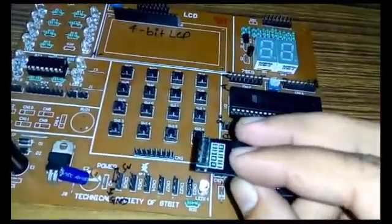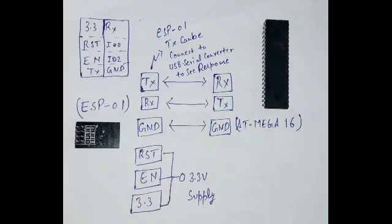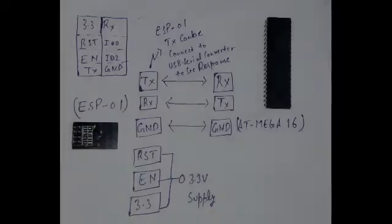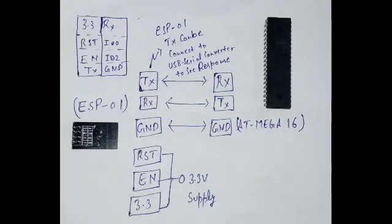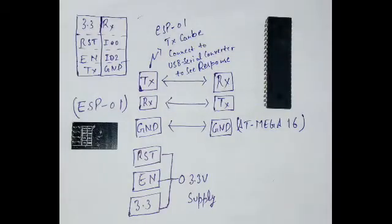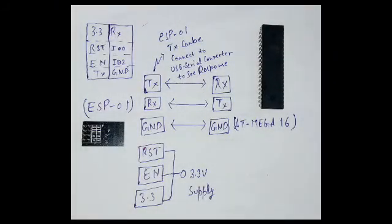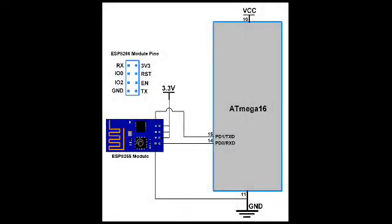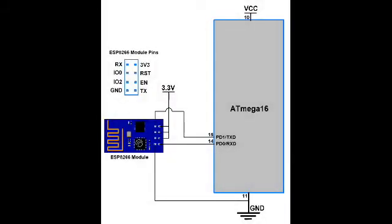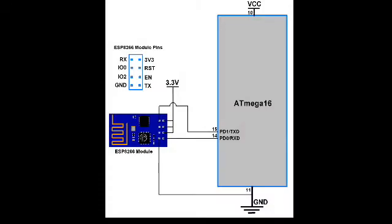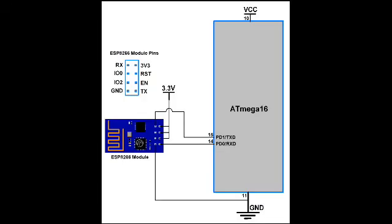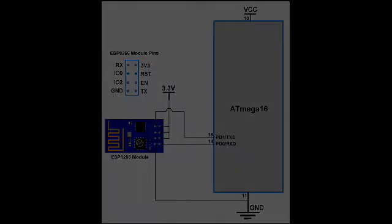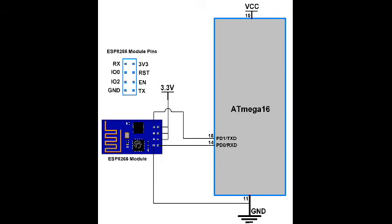This is the basic circuit diagram of the ESP-01. Enable and reset pins are shown, 3.3V is given to VCC, ground is connected to ground, the RX pin of your ESP is connected to the TX pin of your ATmega16 controller, and the TX pin of the ESP can be connected to your controller or directly to a USB-to-serial converter or Arduino to see the response of the ESP. That's the whole basic connection you should know.